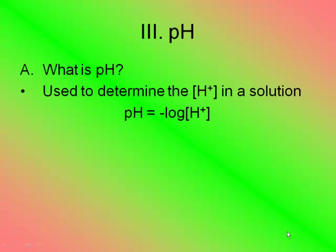So what exactly is pH? pH is used to determine the H+ concentration in a solution. And the actual formula for it is pH equals negative log of H+. So in reality, we're going to use this little p symbol a lot. This little p always stands for negative log. So in the case of pH, it's the negative log of the H+ concentration.